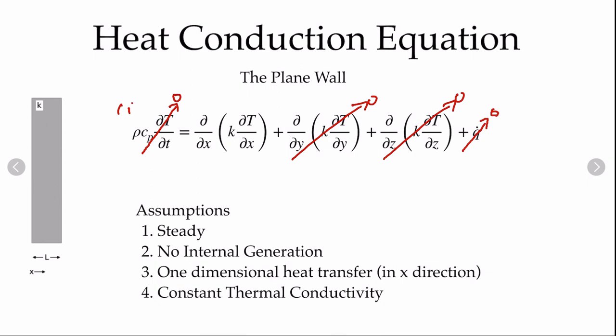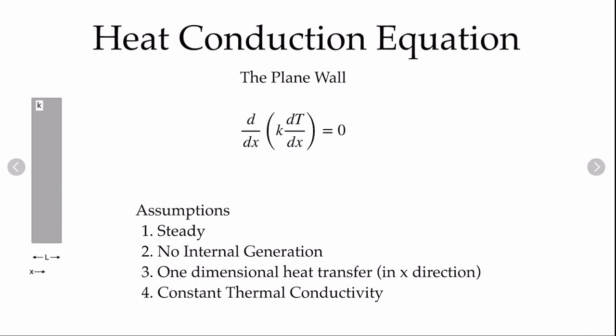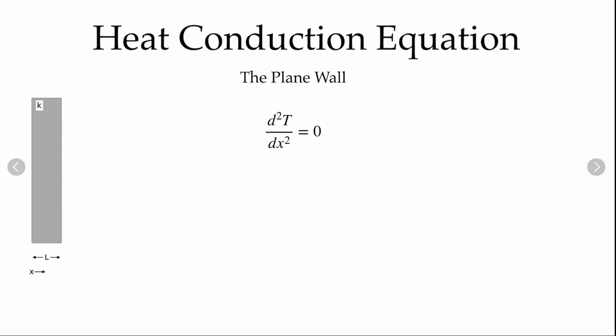Labeling those: zero time term from assumption one, zero generation from assumption two, zero y and z derivatives from assumption three. Now with only a single term remaining, we can use ordinary differentials since there are only variations in x. Our fourth assumption is that thermal conductivity is constant, which lets us pull k out of the derivative operator and divide it out. The final governing equation applies to a plane wall where heat transfers through in the x direction and the cross-sectional area is constant.